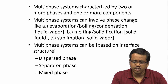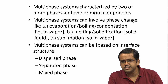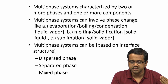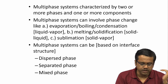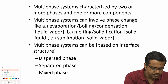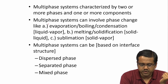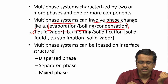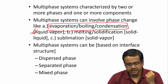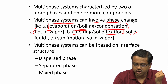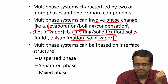Multiphase systems can also involve phase changes. Phase change events include evaporation, boiling, and condensation — where the phase change happens between liquid and vapour — as well as melting and solidification between solid and liquid, and sublimation, which involves solid and vapour.